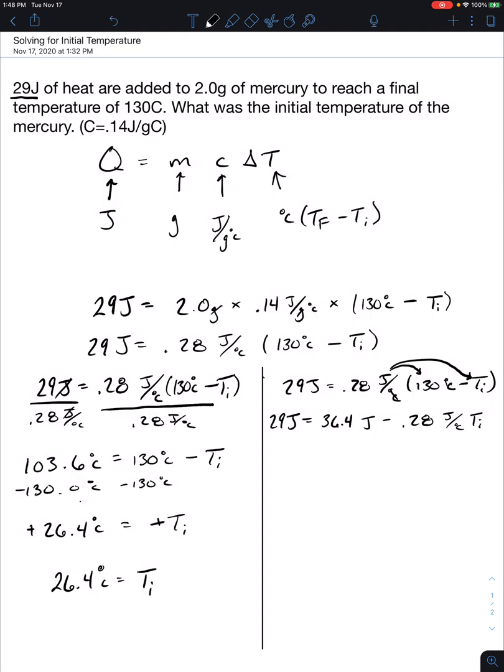So we're going to combine like terms which we have here. So we're going to subtract 36.4 joules from both sides. That allows us to cancel that out. So it's 29 joules minus 36.4. So you should get negative 7.4 joules is equal to negative 0.28 joules over degrees Celsius Ti.